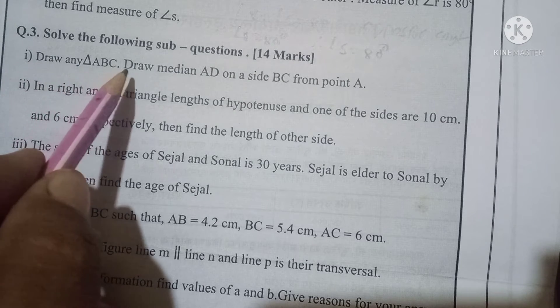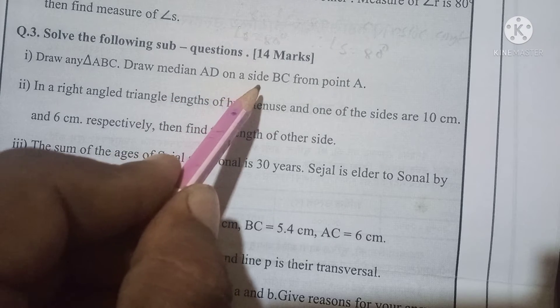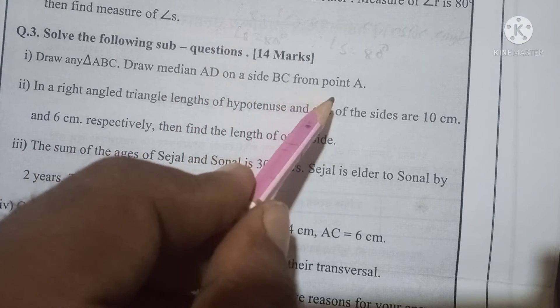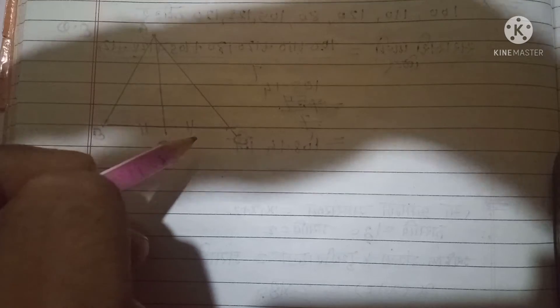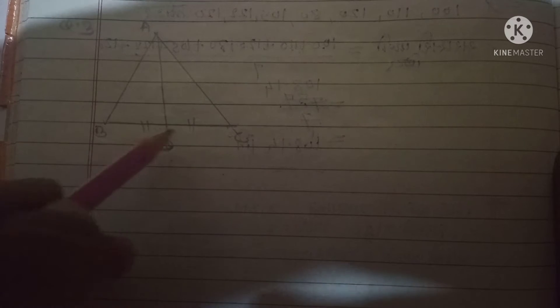Question 3, sub-question 1: Draw triangle ABC and draw median AD on side BC from point A. We draw the diagram with points A, B, C, where AD is the median that bisects the opposite side BC.